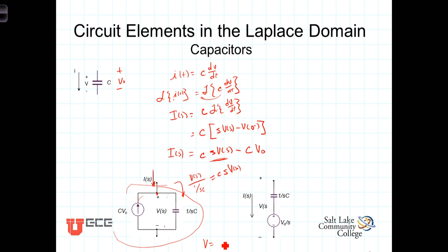That's just the current times the impedance. The Cs cancel, and we're left with V0 over s for that. And then, of course, we just take the impedance and put it in series.